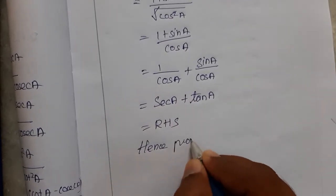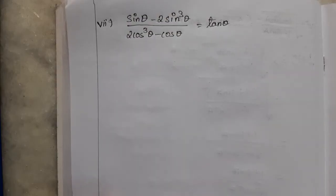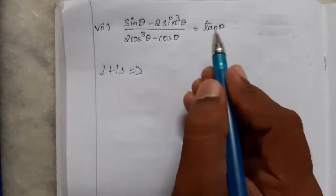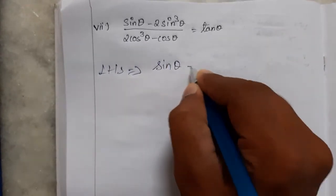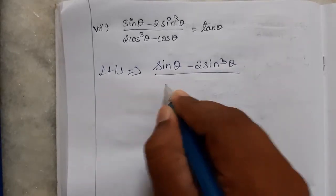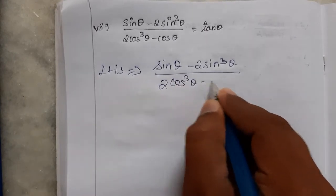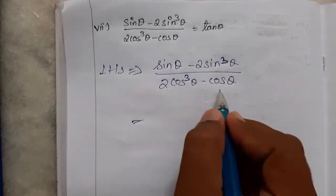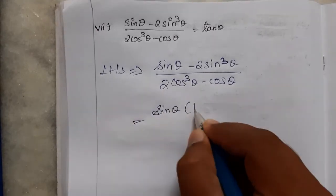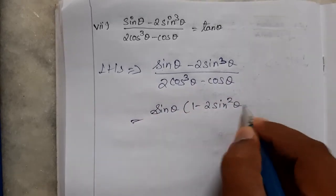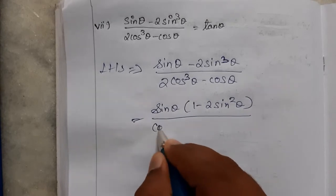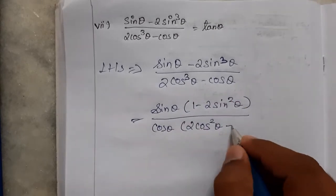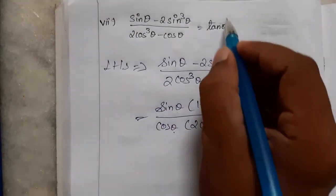Here we go for the next problem: sin theta minus 2 sin cubed theta divided by 2 cos cubed theta minus cos theta is equal to tan theta. The entire LHS needs to be changed. We can see sin theta cubed and sin theta in the numerator, and cos cubed and cos theta in the denominator, so we take common factors outside. Numerator: sin theta times 1 minus 2 sin squared theta. Denominator: cos theta times 2 cos squared theta minus 1. We know sin theta by cos theta is tan theta.